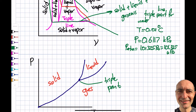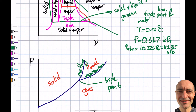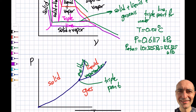Let's identify the phase changes on the PT diagram. The liquid-to-gas transition is vaporization. The solid-to-liquid transition is melting. Going directly from solid to gas — which corresponds to the solid-vapor region on the PV diagram — is called sublimation. The sublimation curve runs along the bottom branch of the Y-shape.